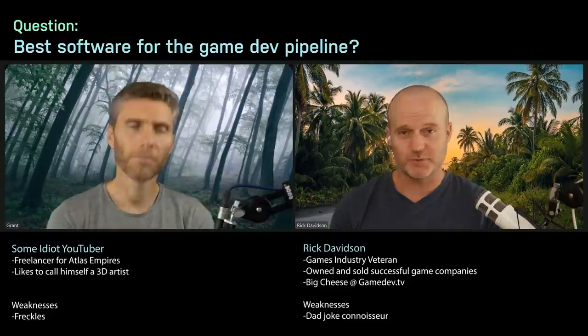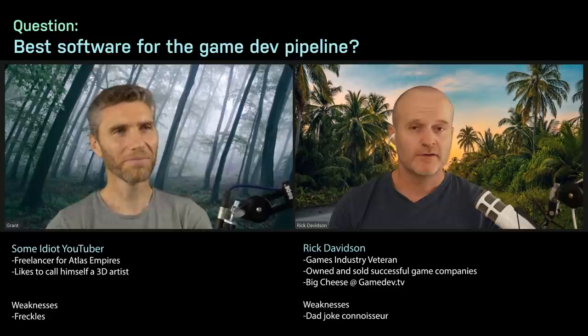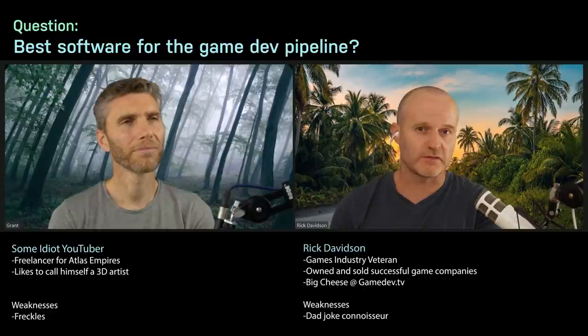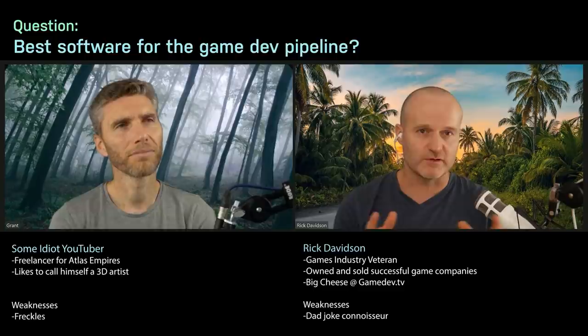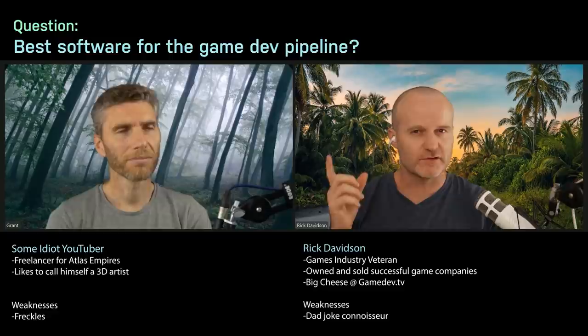In terms of art software, whatever you've been using — if you've been using Blender, keep using Blender. If you're making a 2D game, ASprite is amazing and it's only $20. In terms of source control, you can use Git. I've used Perforce in the past — that's better the bigger the team. These days I use SourceTree and GitLab. You absolutely have to have a source control system.